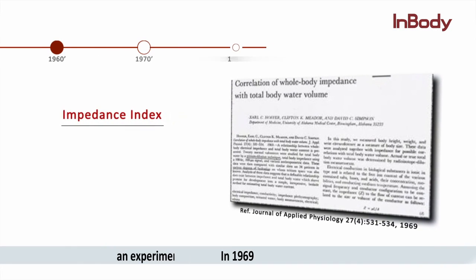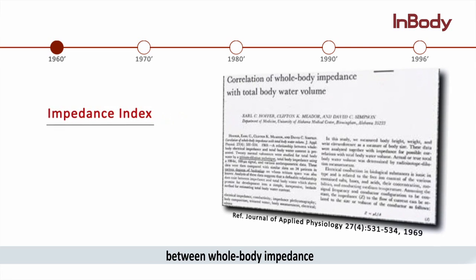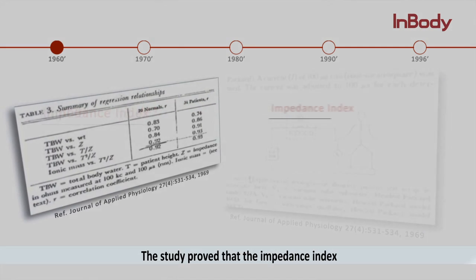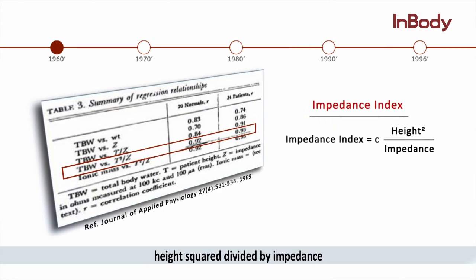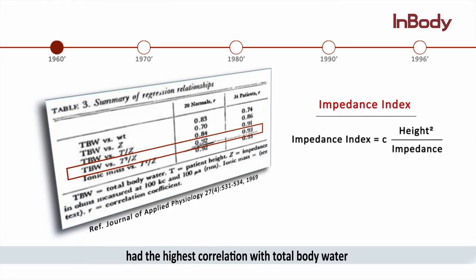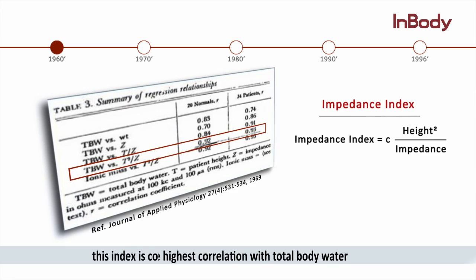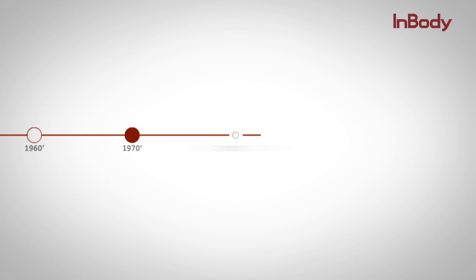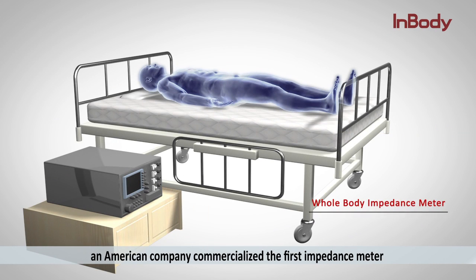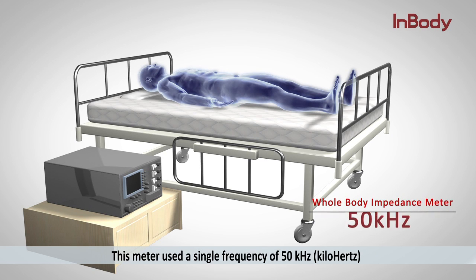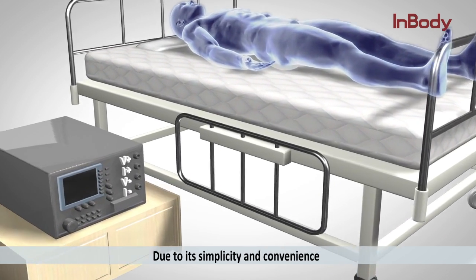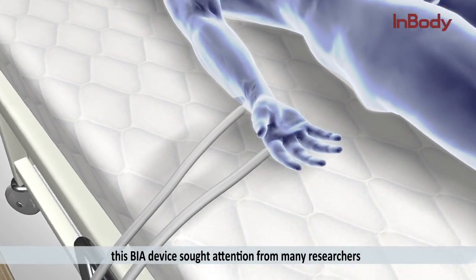In 1969, an experiment was carried out to find the correlation between whole body impedance and volume of total body water. The study proved that the impedance index — height squared divided by impedance — had the highest correlation with total body water, and this index is considered the starting foundation of BIA devices. Ten years later, an American company commercialized the first impedance meter, which used a single frequency of 50 kilohertz and measured the body's impedance. Due to its simplicity and convenience, this BIA device attracted attention from many researchers.